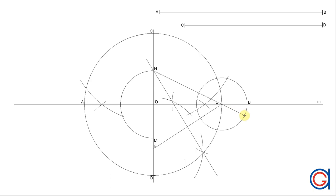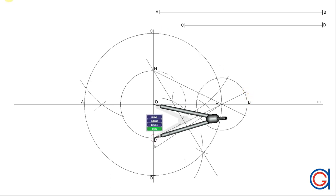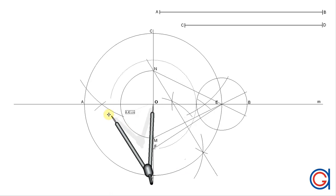The next step, we are going to join points N through E, prolongating the line until it cuts the small circle — this is a tangent point of our ovoid. Then joining points M through E until it cuts the small circle, we get our second tangent point, as shown here.